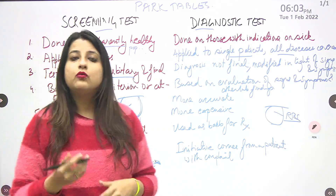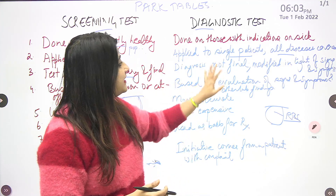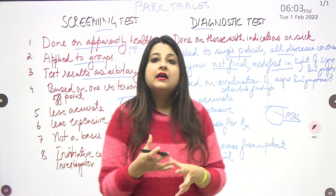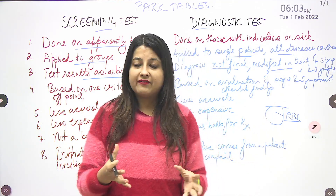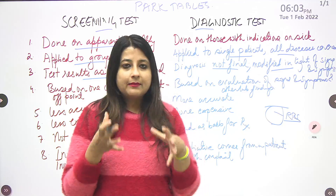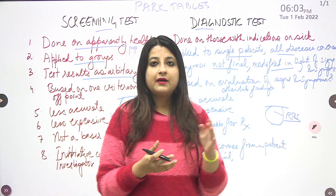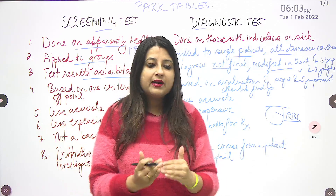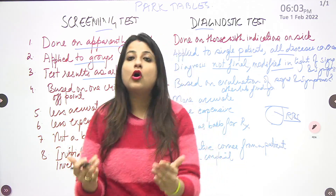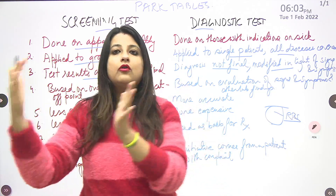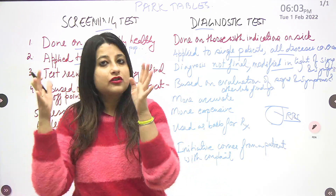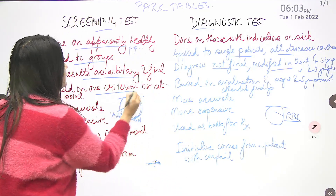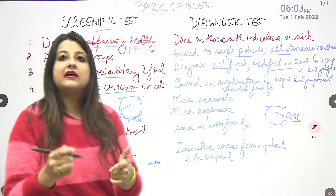Third point: screening test results are arbitrary and final based on one cutoff criterion, whereas in a diagnostic test, the diagnosis is not final — it is modified in line with other evidence. For example, for screening hypertension, I set the cutoff at 140/90, so anybody with a blood pressure above 140/90 goes into the screening-test-positive category. That is fixed and final, based on one cutoff point.